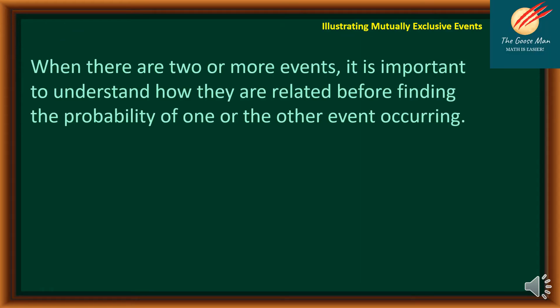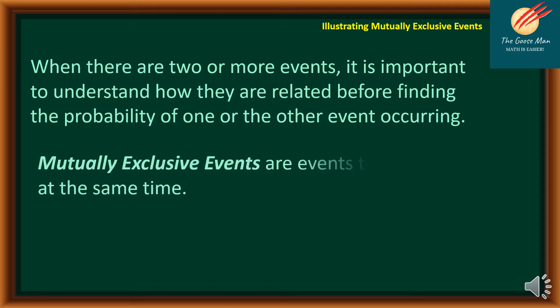So when there are two or more events, it is important to understand how they are related before finding the probability of one or the other event occurring. Mutually exclusive events are events that cannot occur at the same time.